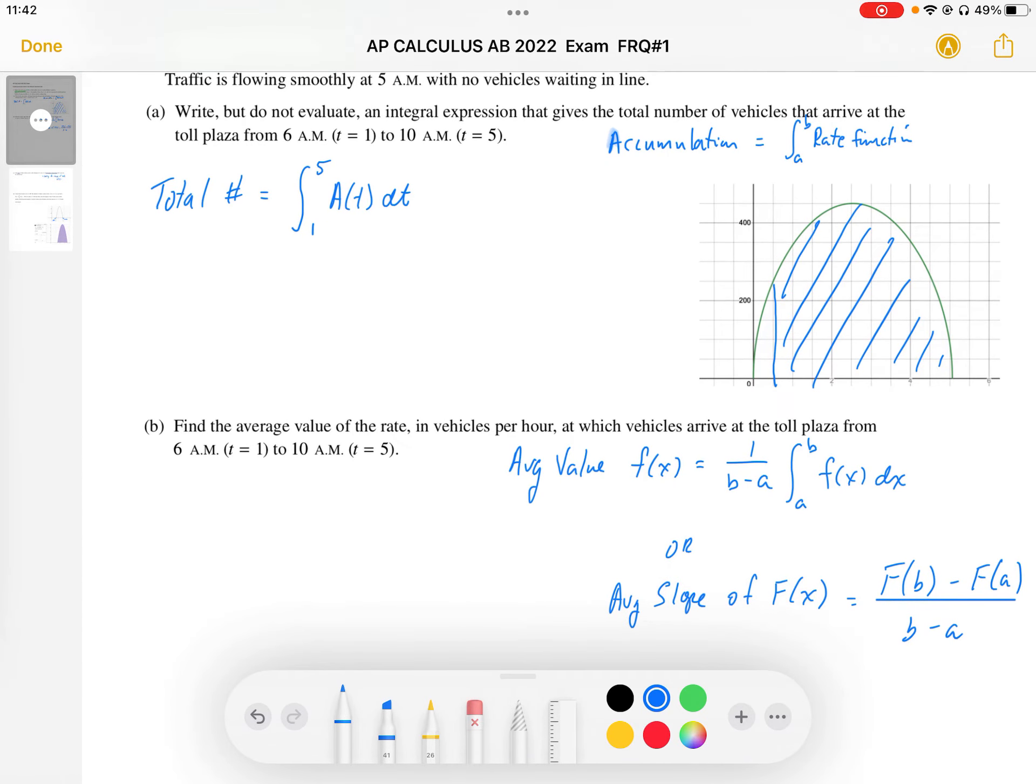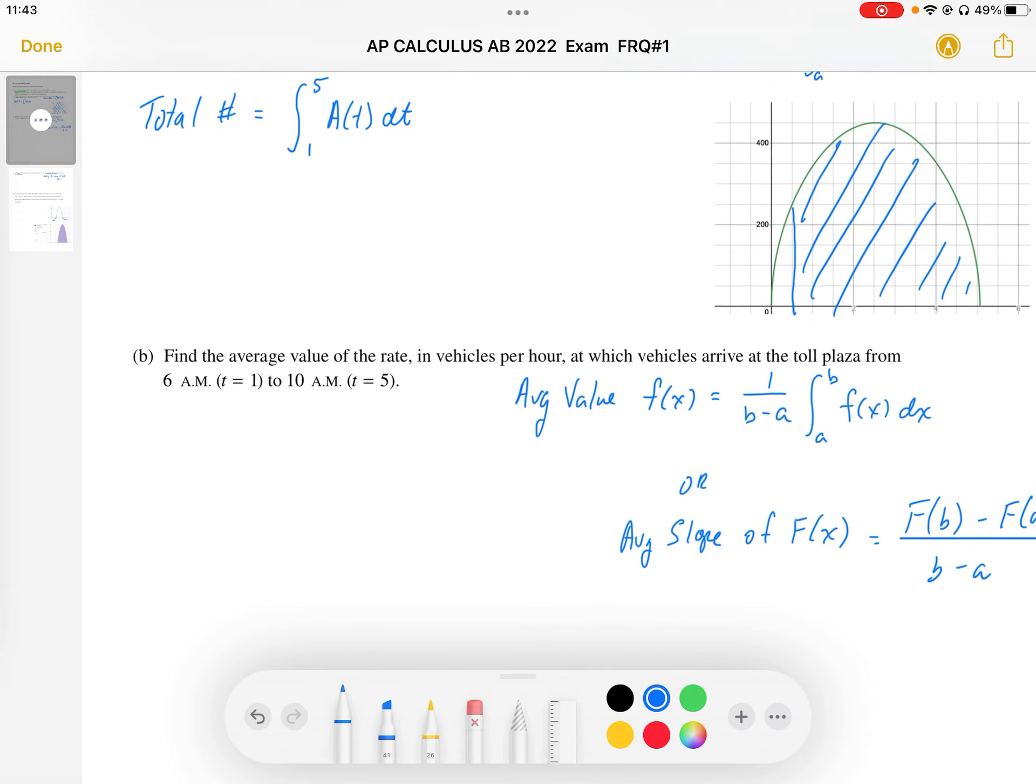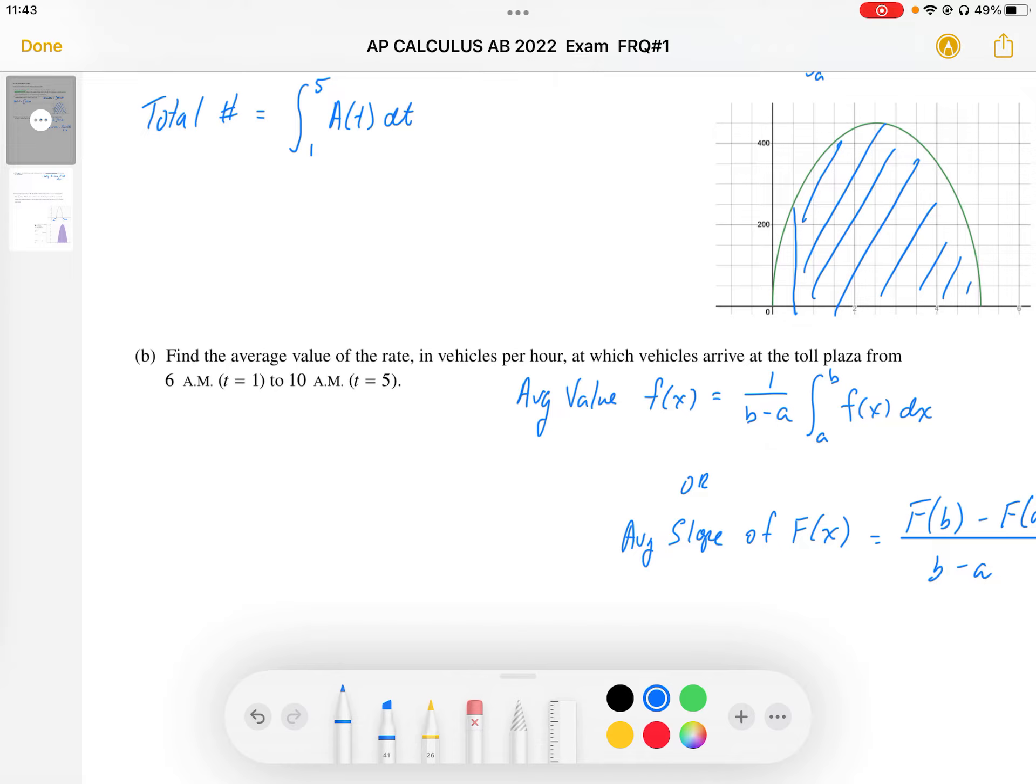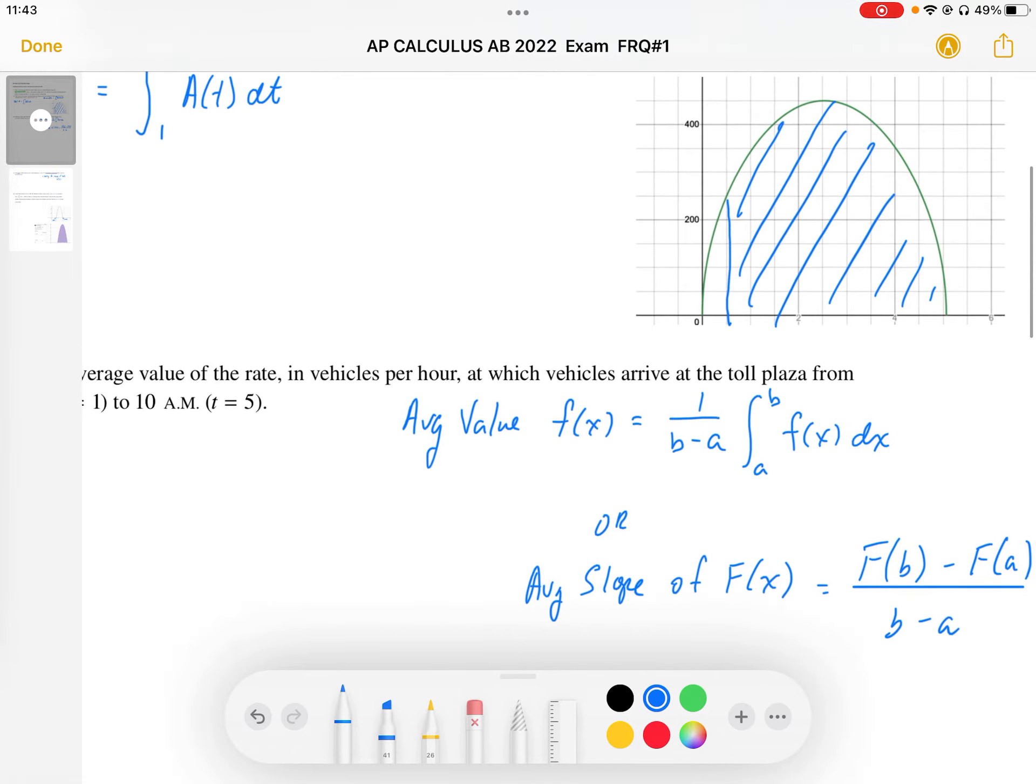Part B says find the average value of the rate in vehicles per hour at which the vehicles arrive at the toll plaza from 6 a.m. to 10 a.m. The average value of the rate, we're really finding the average value of our f(x) function. We have a formula to do this.